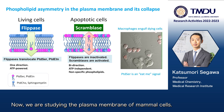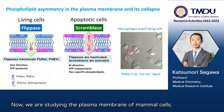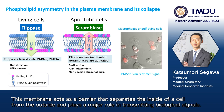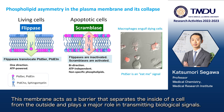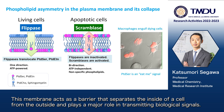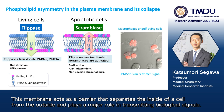Now, we are studying the plasma membrane of mammalian cells. This membrane acts as a barrier that separates the inside of a cell from the outside and plays a major role in transmitting biological signals.